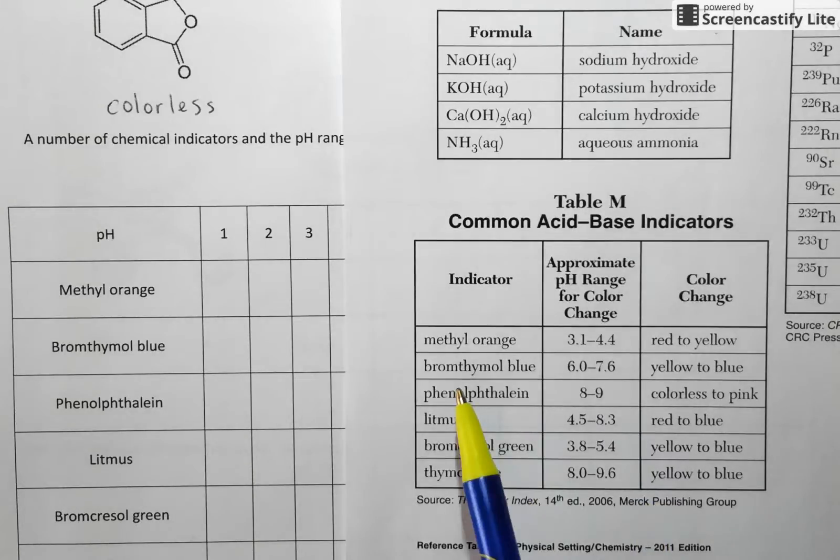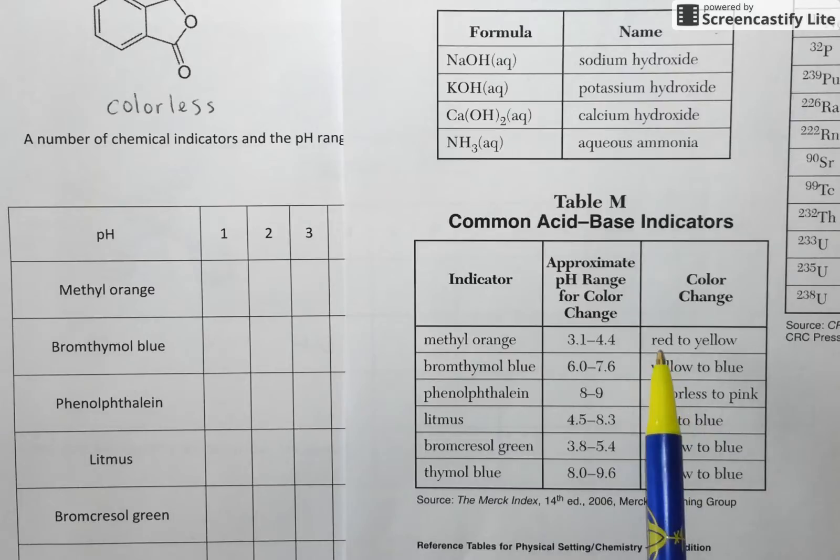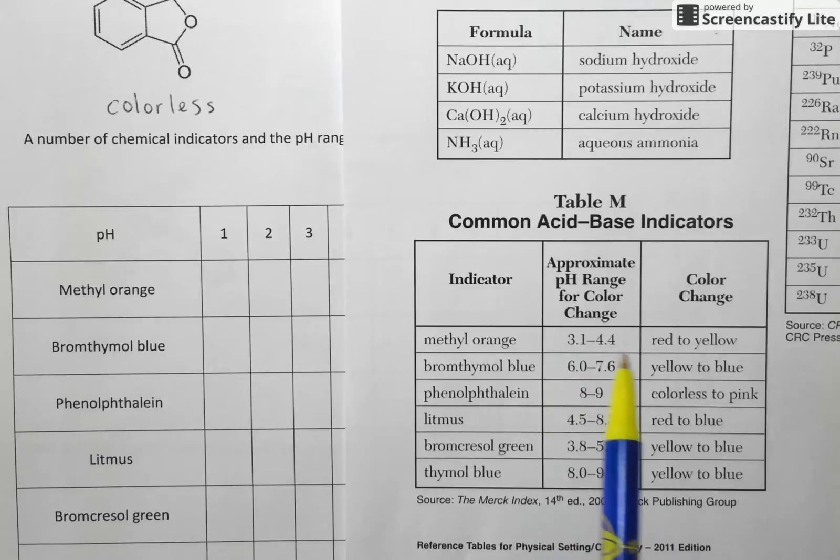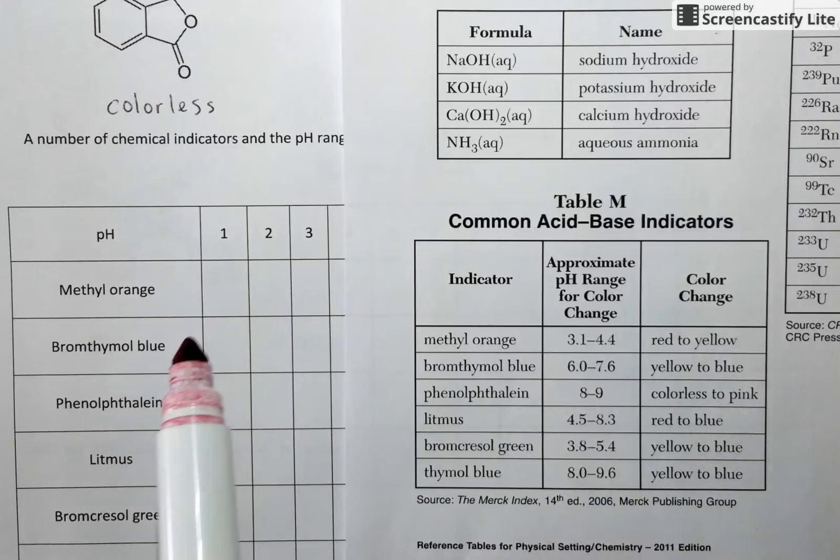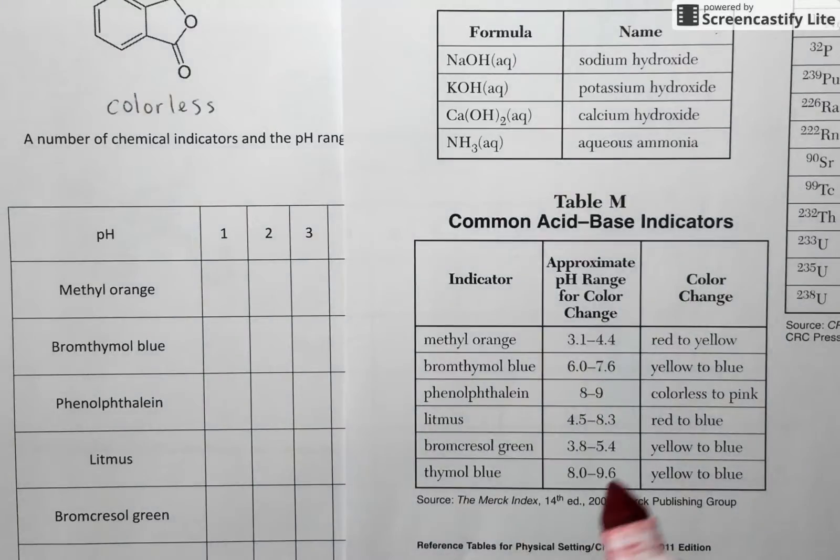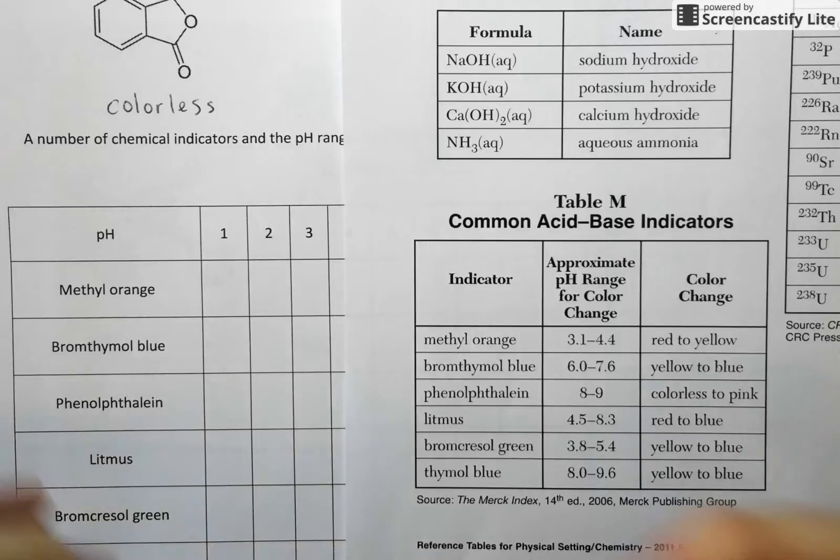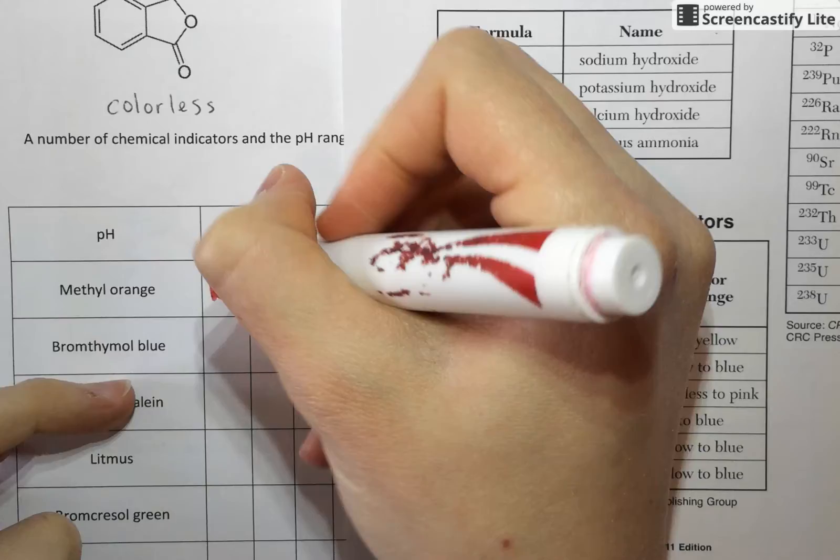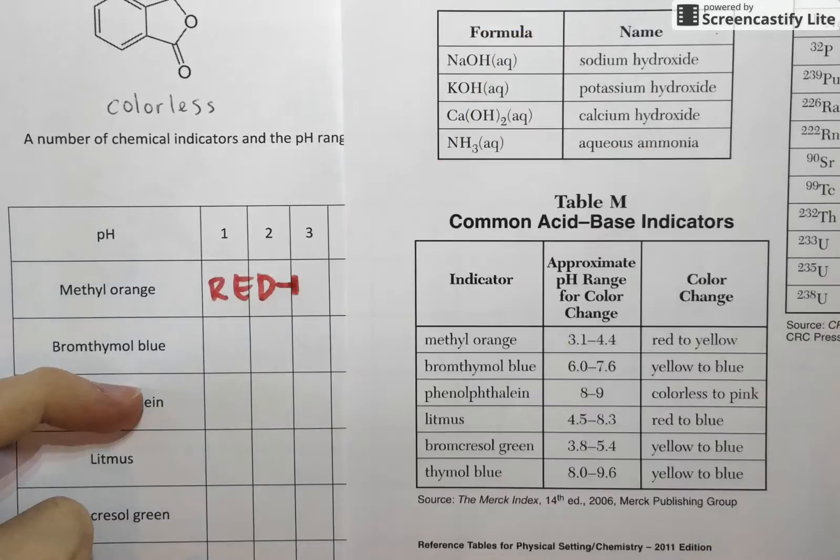So our first indicator that we'll look at is methyl orange. It's just another compound that can change color in different pHs. And methyl orange is going to shift between red and yellow. And this middle column here tells us the pH range when it's kind of in its transition period between red and yellow. So what this really means is that if the pH has not yet reached 3.1, so it's 1, 2, 2.9, methyl orange is going to show up as a red compound. So I'm going to put red here on this table to show that this compound is red until we get to a pH of about 3.1.